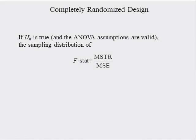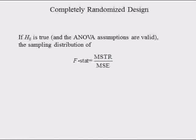Since the ANOVA procedure computes two estimates of population variance sigma squared — MSTR and MSE — and MSTR is expected to be larger than MSE when the null is false but equal to it if the alternative is true, taking the ratio with MSTR in the numerator is just an F-statistic.